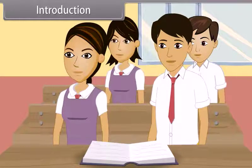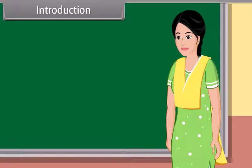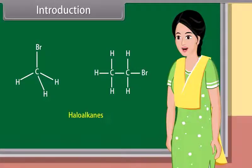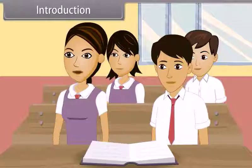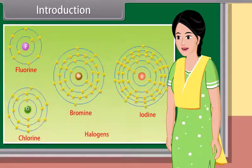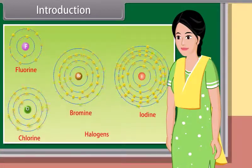Good morning teacher, good morning students. Today we learn haloalkanes and haloarenes. Haloalkanes are the chemical compounds in which one or more of the hydrogen atoms in an alkane have been replaced by a halogen atom. Halogens are the reactive non-metals having seven valence electrons.